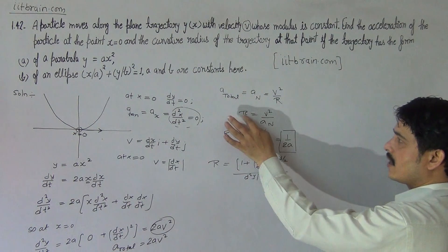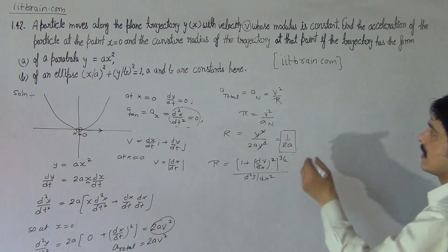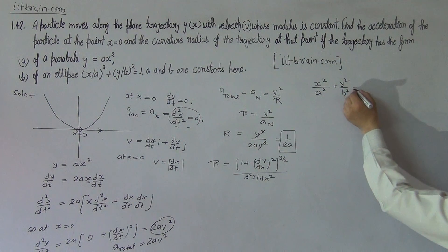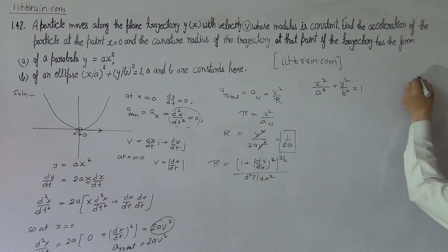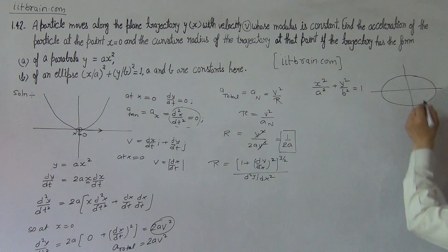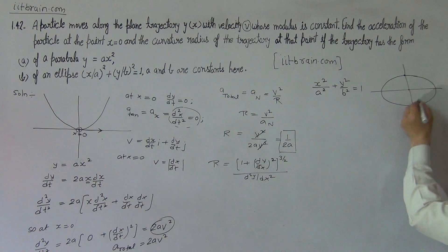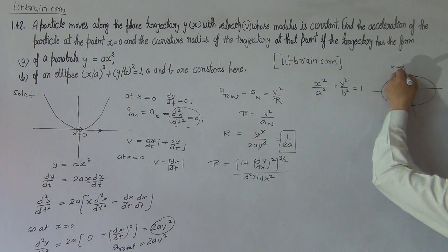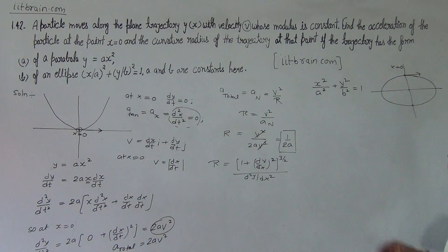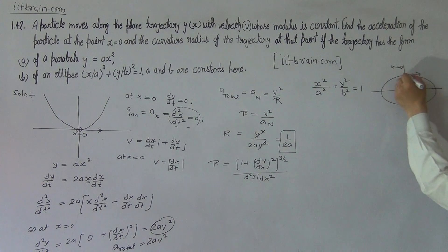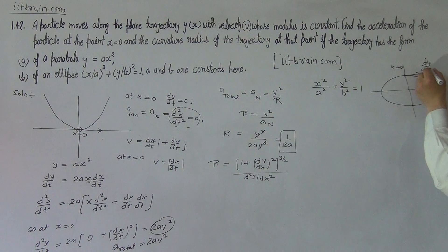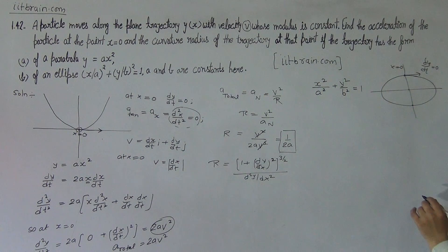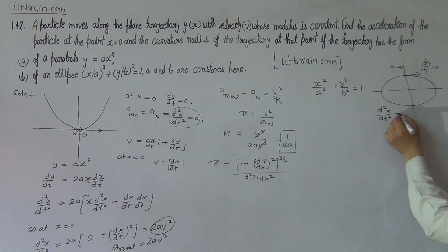Total acceleration is v squared by r. So radius of curvature can also be obtained by this. Similarly, if we use a second curve, it is x squared over a squared plus y squared over b squared equal to 1. If we draw a general plot for this, it will be an ellipse. At x equal to 0, these are two points. Suppose this is the point where x is 0. We see that at this point, velocity will be tangential, and tangential velocity will be parallel to the x-axis. So at x equal to 0, dy by dt will again be 0. And since velocity is constant, tangential acceleration will be 0, and d squared x by dt squared is also 0.